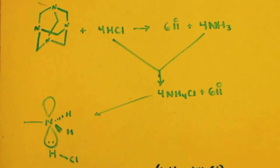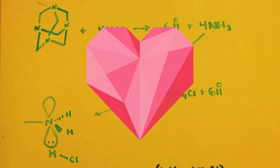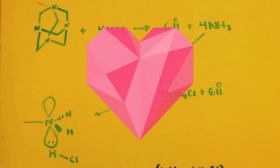This is John Black Breaking Mad. We are here to talk about how to make methylamine from hexamine.